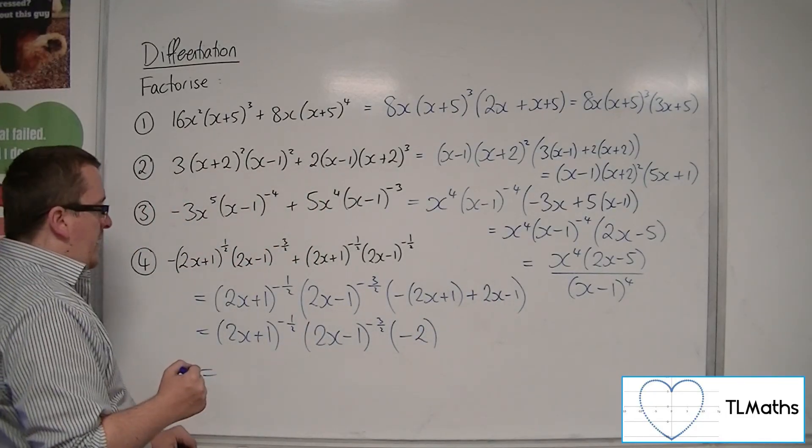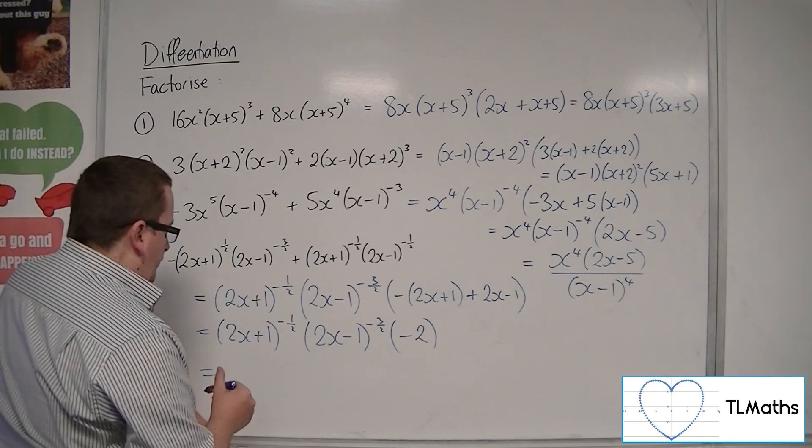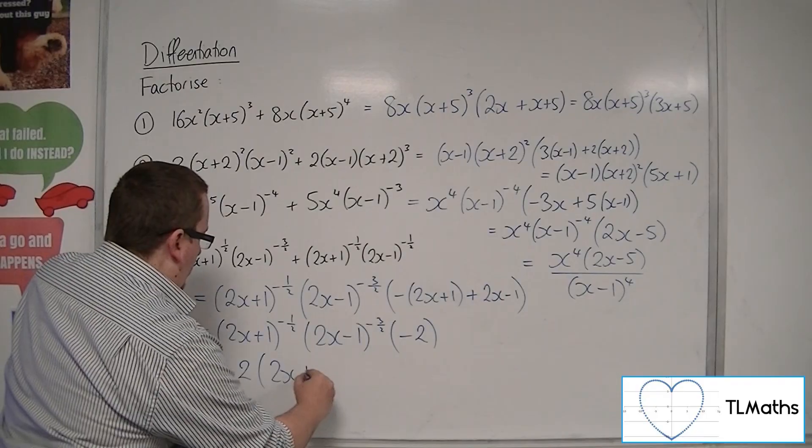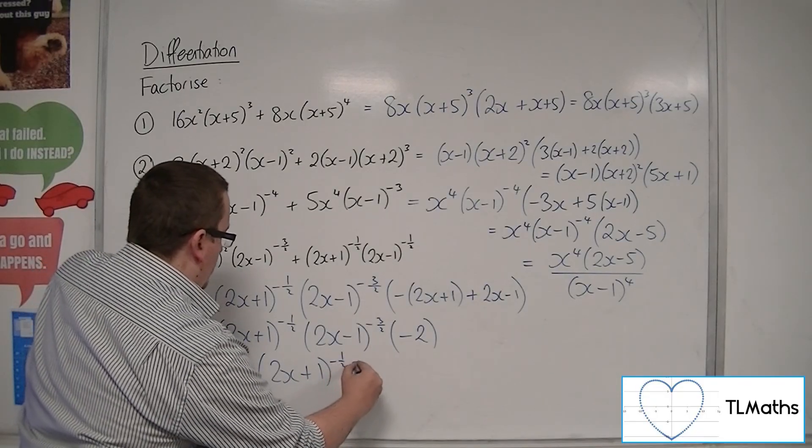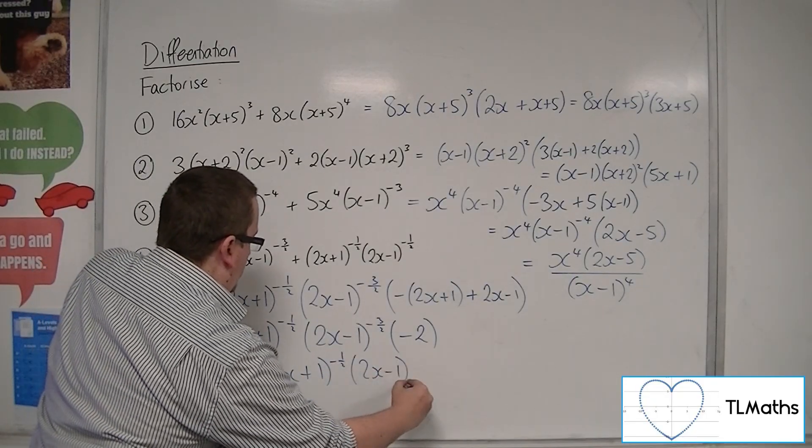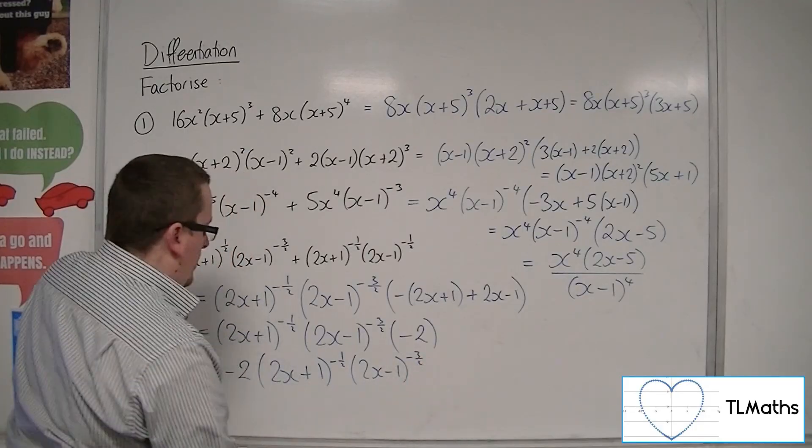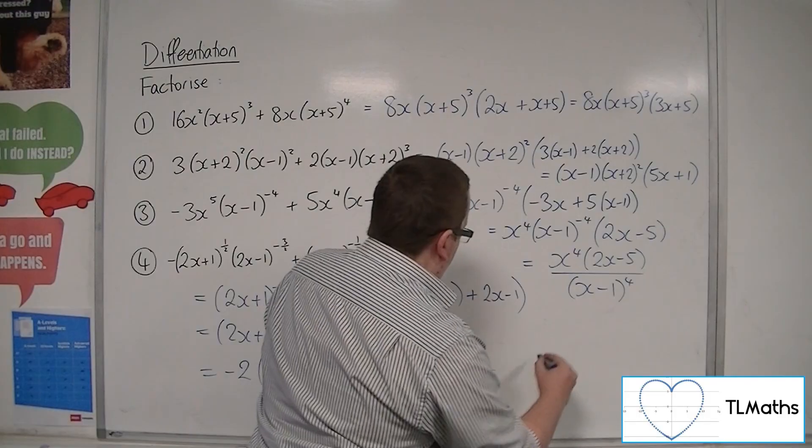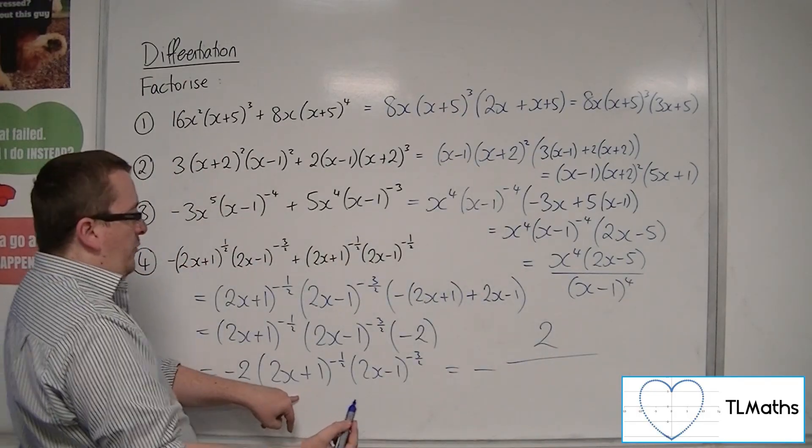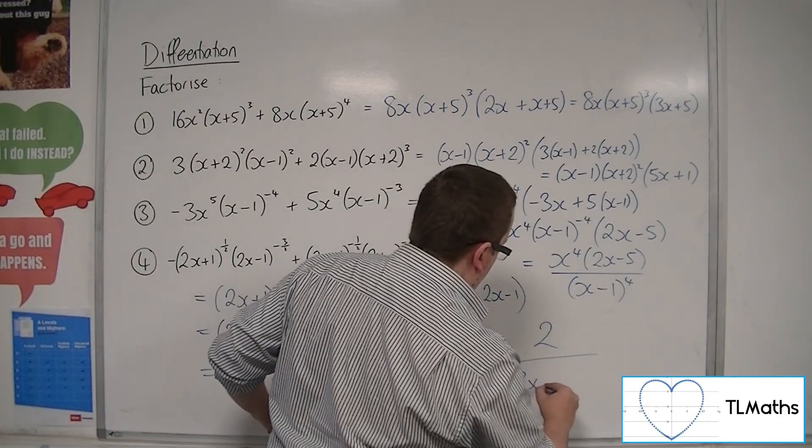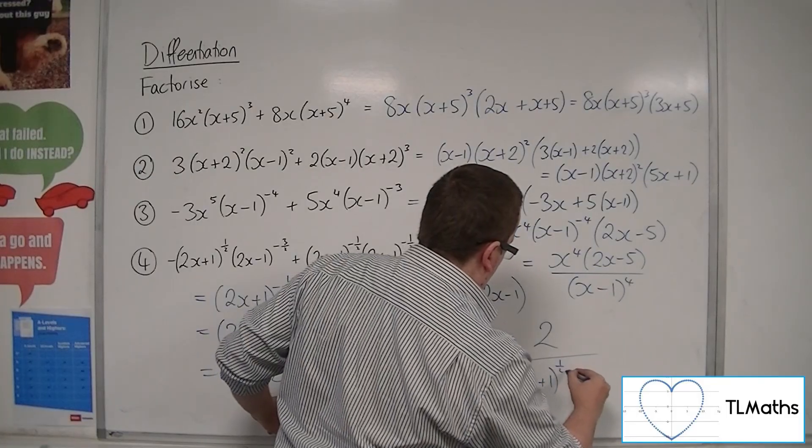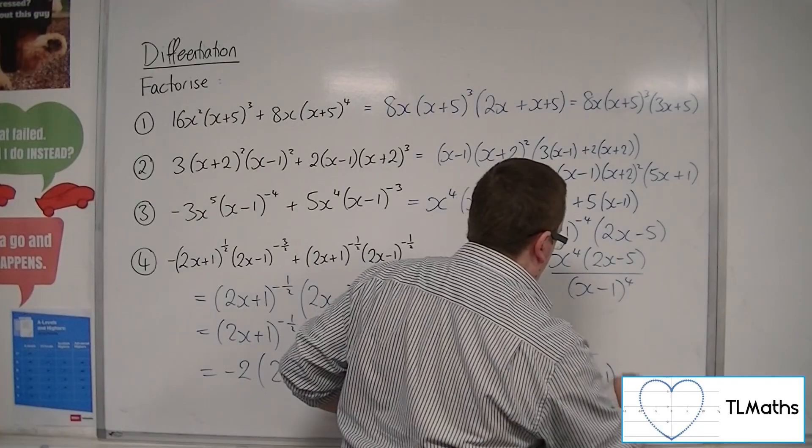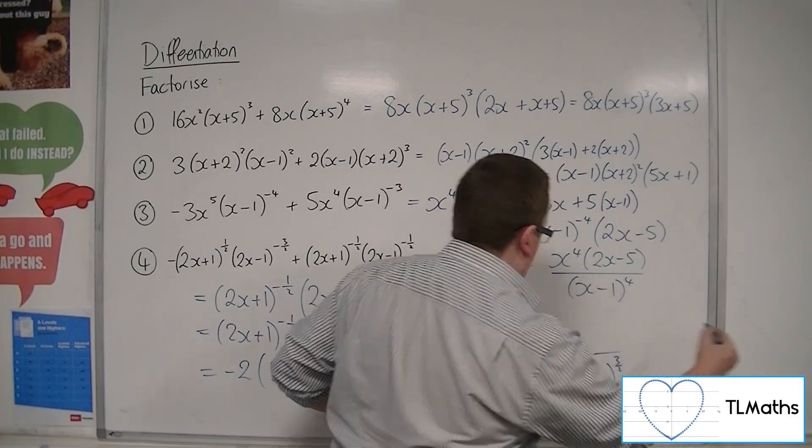So if I wanted to write this, I'll write it like this first. So -2(2x+1)^(-1/2)(2x-1)^(-3/2), and you could write that as a fraction if you wanted to. So -2 over (2x+1)^(1/2)(2x-1)^(3/2), like that.